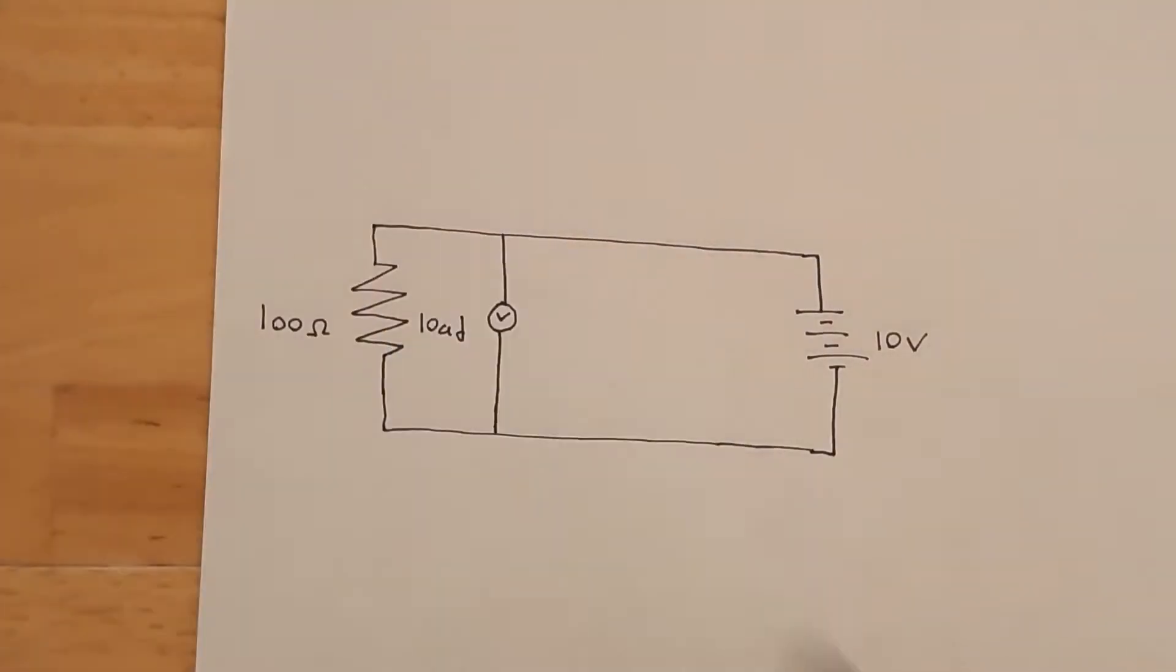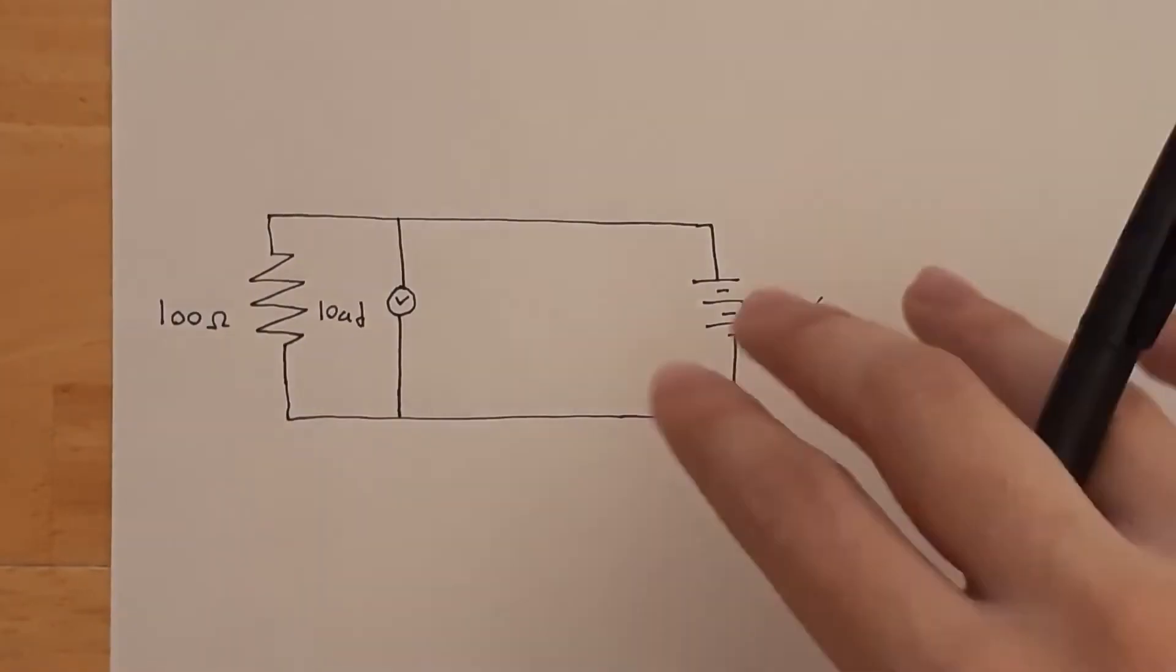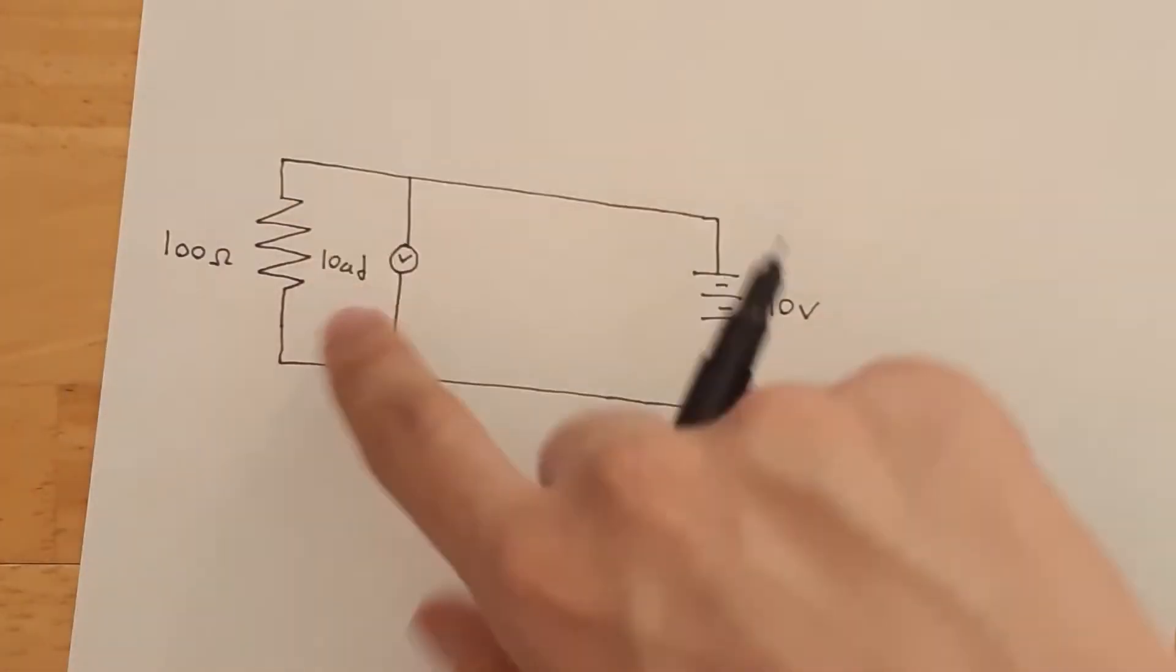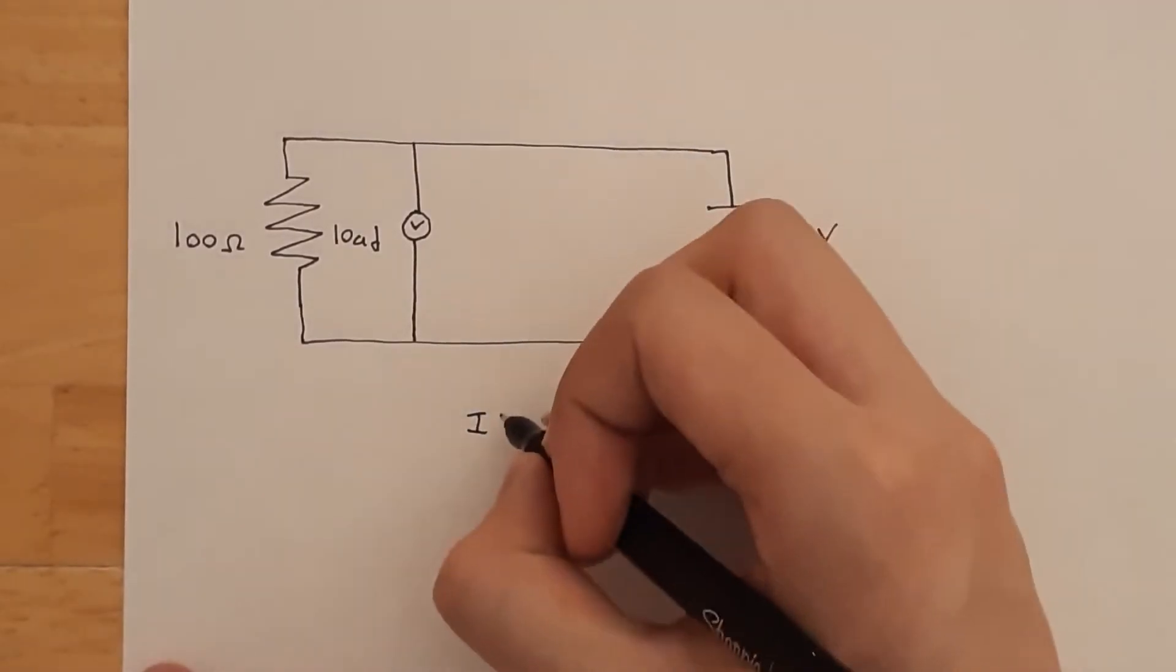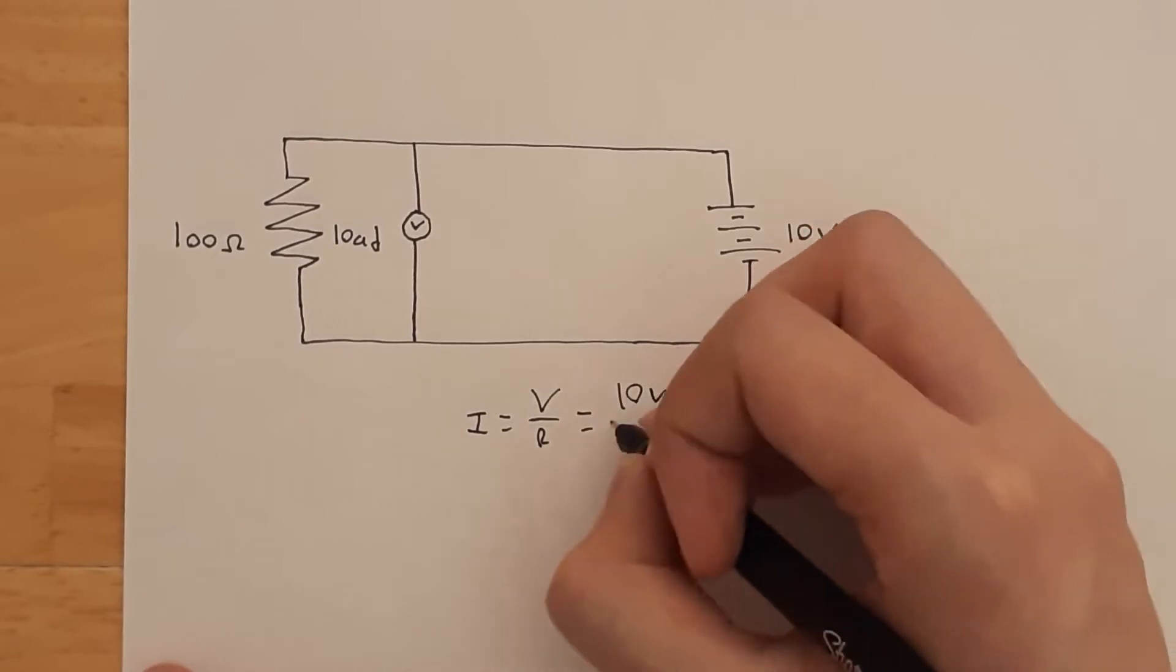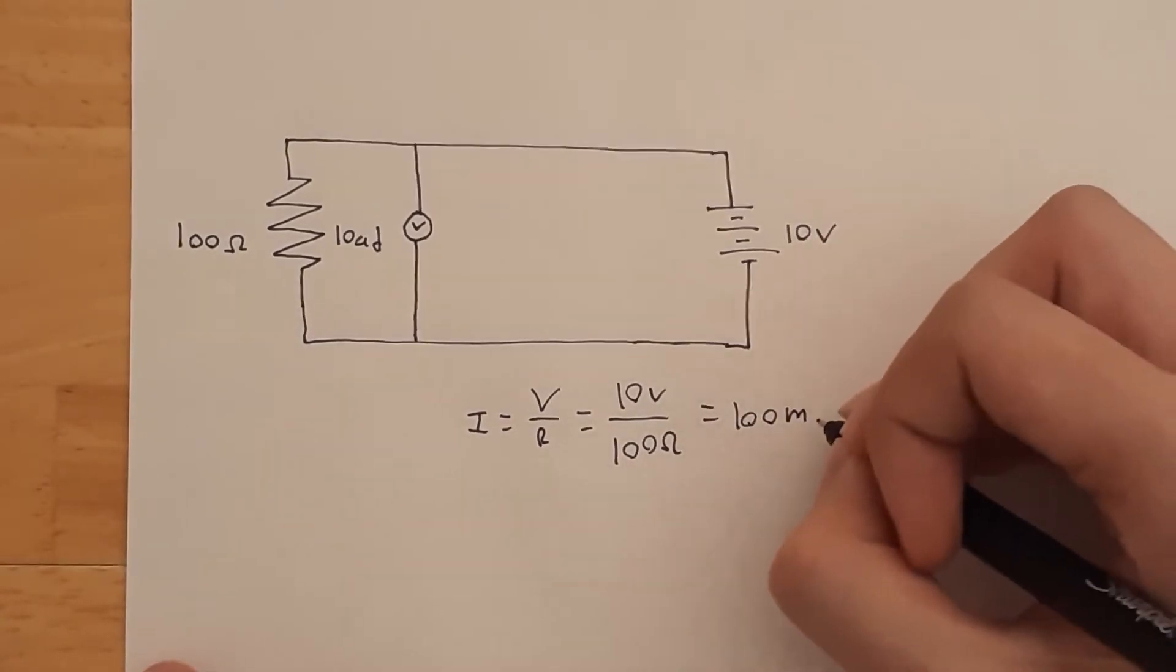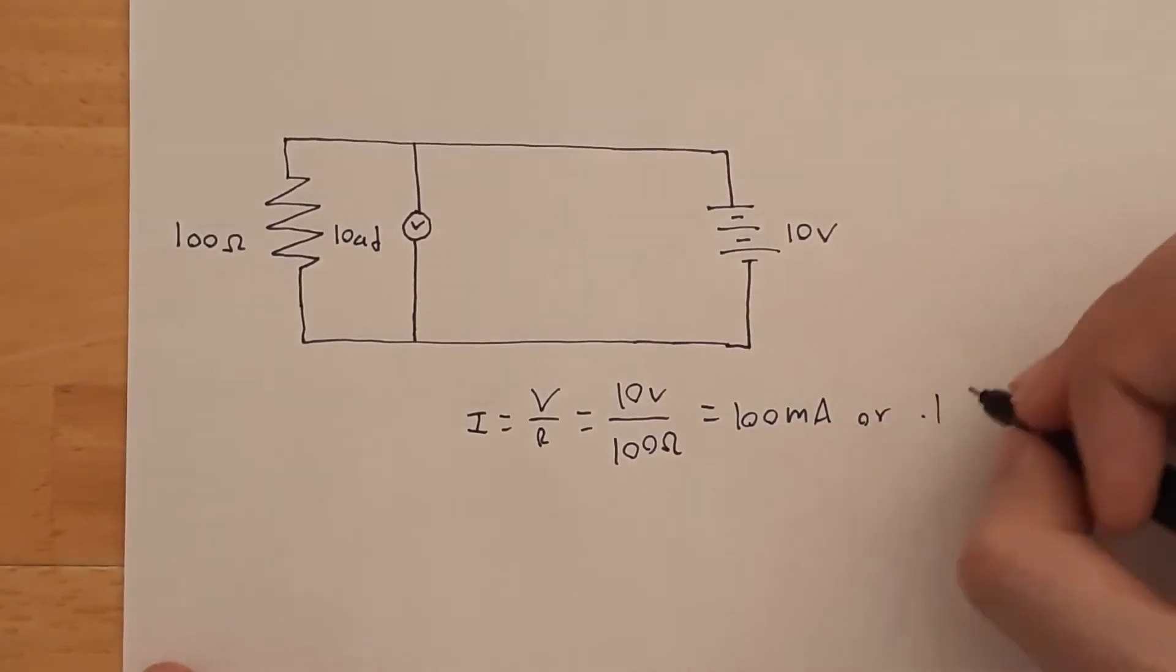Before we start talking about the multimeter, first we want to talk about a really basic circuit. Right now we have the voltage and a simple resistor as a load. If we want to calculate current, I equals V over R, which is 10 volts over 100 ohms, which is 100 milliamps or 0.1 amps.